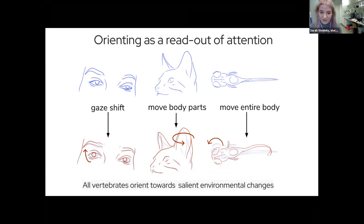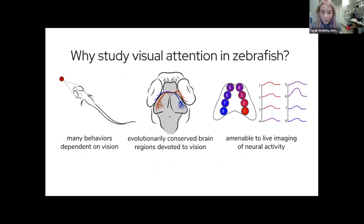Why are we using zebrafish? This is certainly an established model organism in genetics, but it's also a great model for neuroscience and visual neuroscience in particular. They have many behaviors that are entirely dependent on vision that occur very early in development. We have evolutionarily conserved brain regions devoted to visual processing.